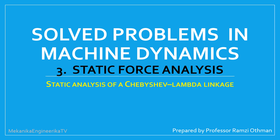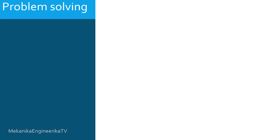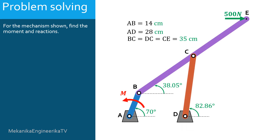This video is part of a series presenting solutions of problems related to the machine dynamics topic. This video presents the solution of a problem dealing with the static analysis of a Chebyshev-Lambda mechanism. We are asked to find the moment and the reactions for the mechanism shown. The mechanism is a Chebyshev-Lambda straight line linkage. The position of the linkage is given and the link lengths are known. The mechanism is subjected to a horizontal rightward force at A.